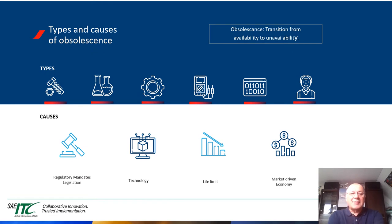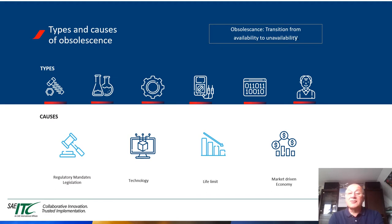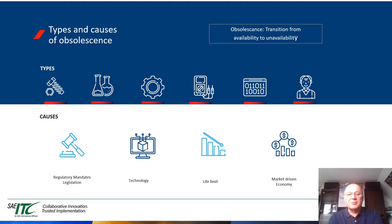Let me tell you about types and causes of obsolescence. There are different types. In our discussions during the writing of Airing 662, we found that there are six different types: obsolescence of piece parts, obsolescence of chemicals, obsolescence of components in aircraft, obsolescence of test equipment in your shops, obsolescence of software, and obsolescence of people. The causes for those obsolescences could be regulatory mandates and legislation, new technologies, life limits of piece parts, and market-driven economy.